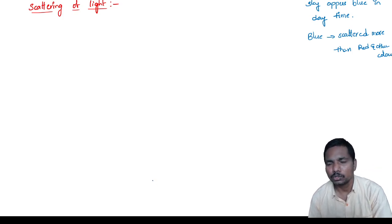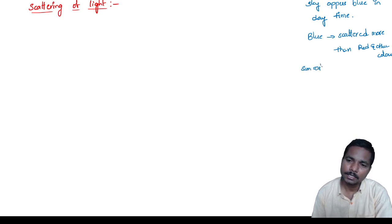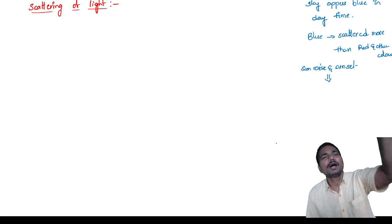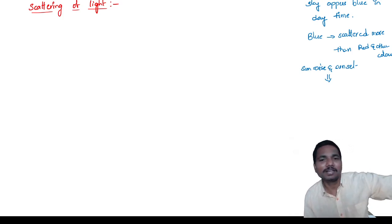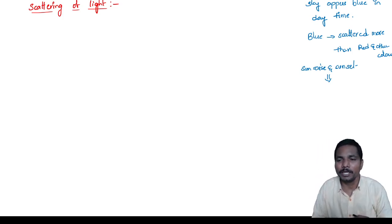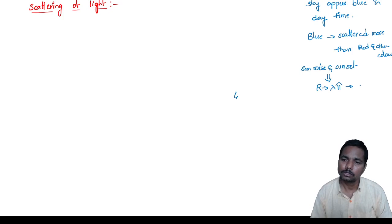Blue is scattered more than red and other colors, so in daytime the sky appears as blue color. In case of sunrise and sunset, we are seeing from longer distances. Sunrise is in the east and sunset is in the west — both are very far away. From long distances, red color is visible because red has more wavelength. So at sunrise and sunset, observe the red sky.